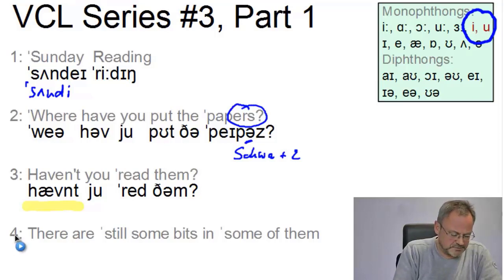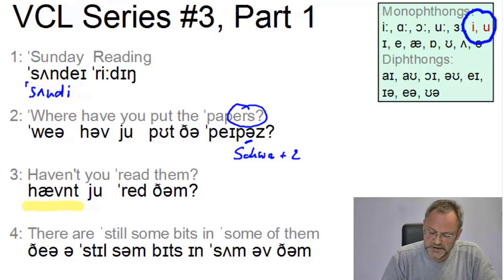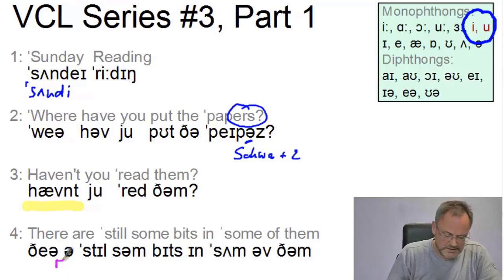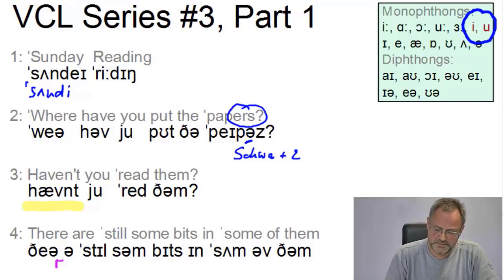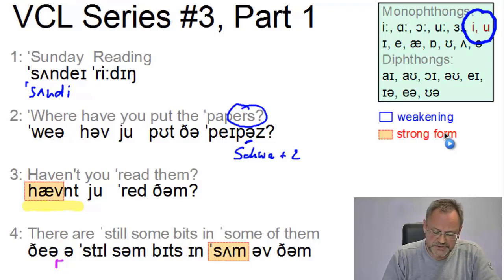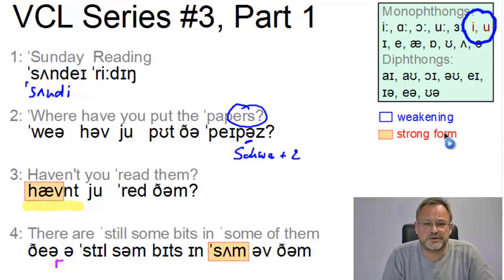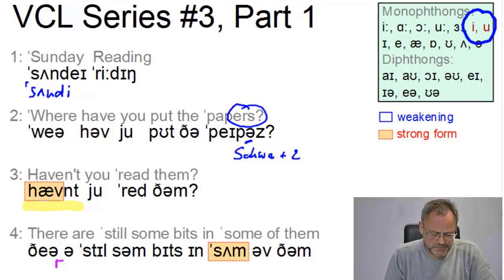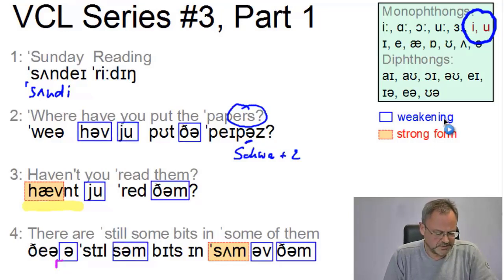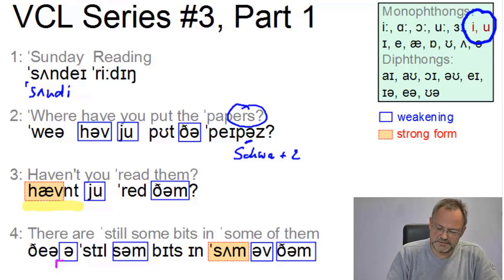Line four: 'There are still some bits in some of them.' You might want to argue we could have a linking R, but again — I cannot repeat this often enough — liaison is optional, so why transcribe it in a transcription exercise? It's only a source for mistakes. Looking at connected speech effects: 'haven't' is a strong form occurring at the beginning of an interrogative sentence. In line four we nicely see the contrast between the weak form 'some' and the strong form 'some': 'There are still some bits in some of them.' There are quite a number of weak forms in the first four lines.